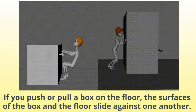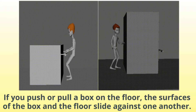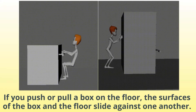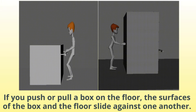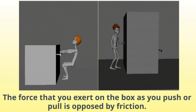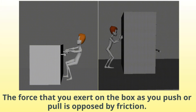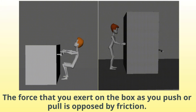If you push or pull a box of books on the floor, the surfaces of the box and the floor slide against one another. The force that you exert on the box as you push or pull is opposed by friction.